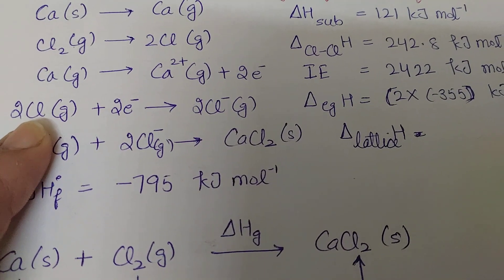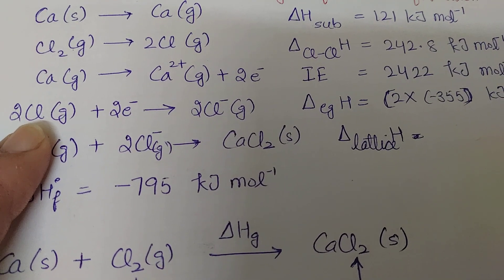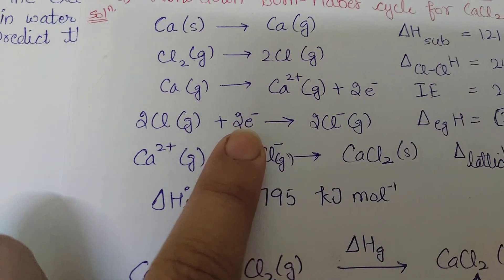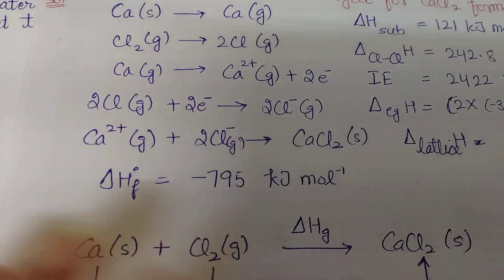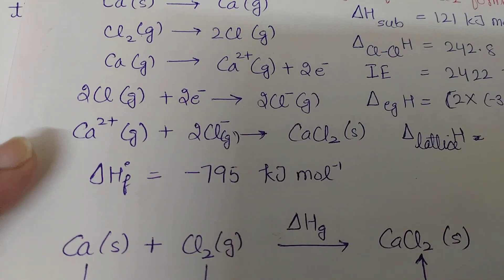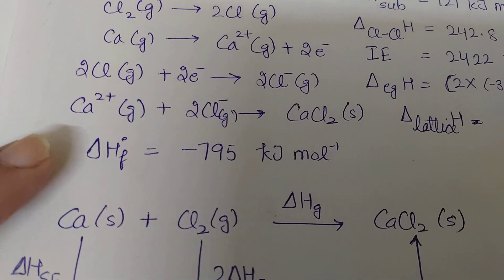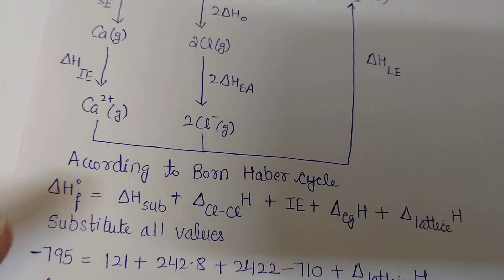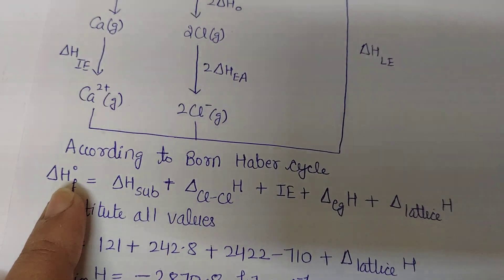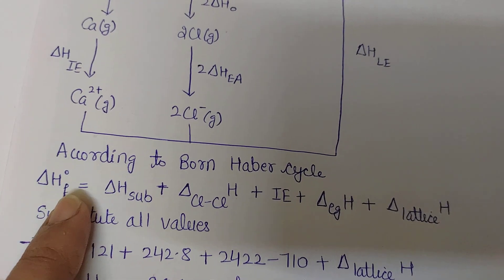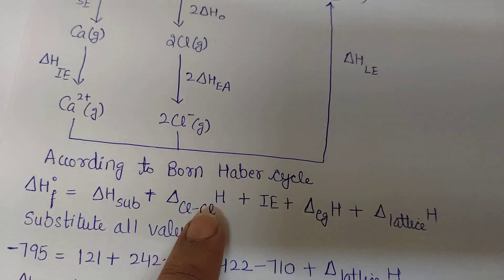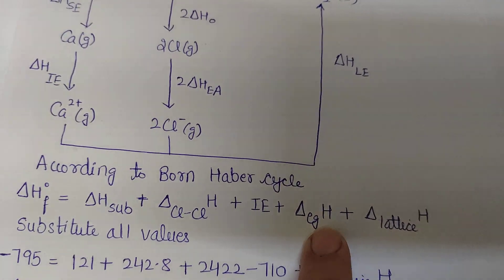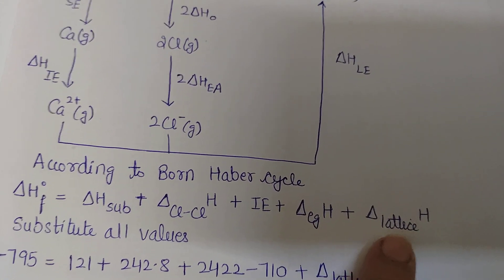Chlorine gains two electrons to form the anionic chloride ion. The total formula for the Born-Haber cycle is: heat of formation equals heat of sublimation plus dissociation heat plus ionization energy plus heat of lattice.